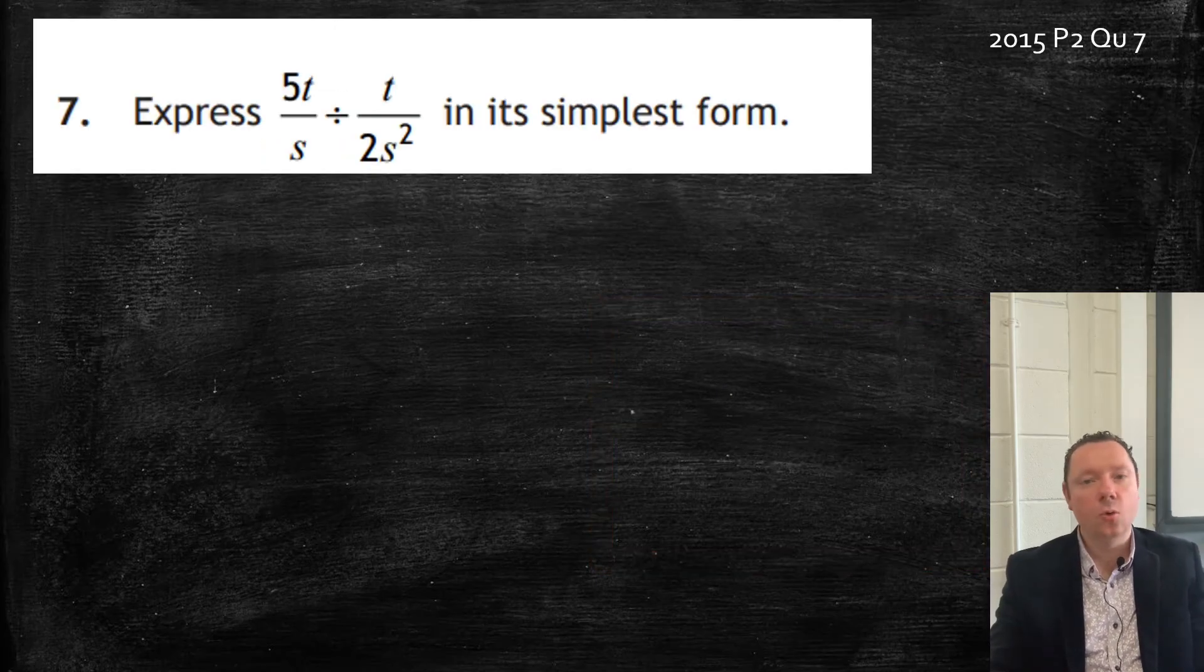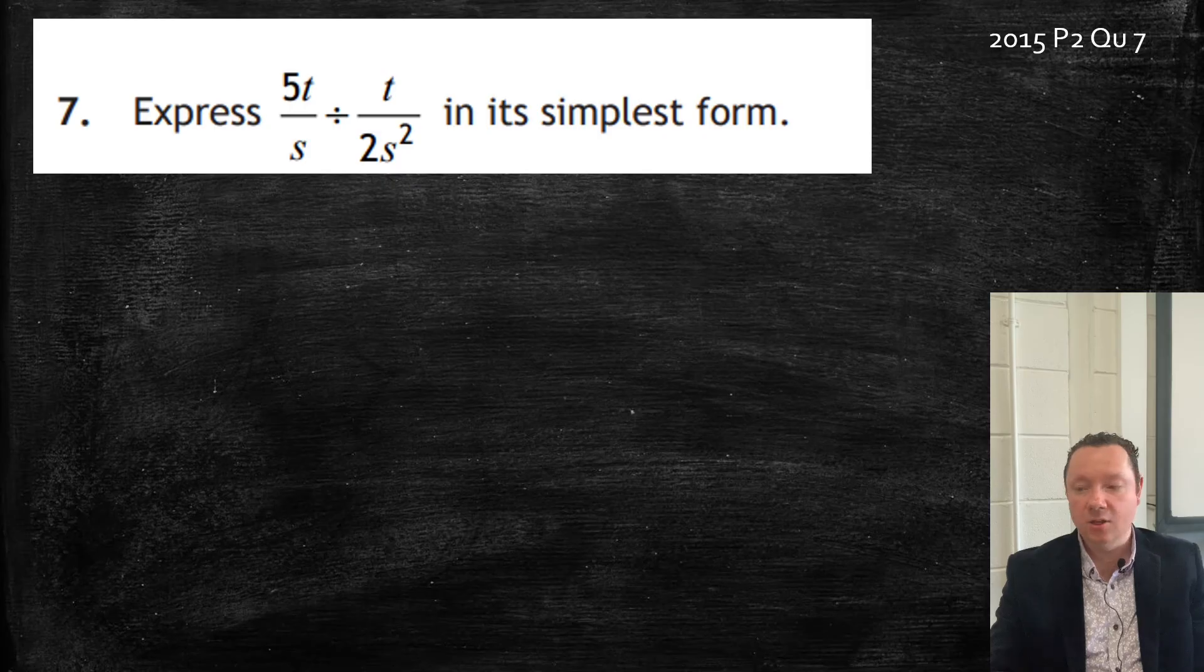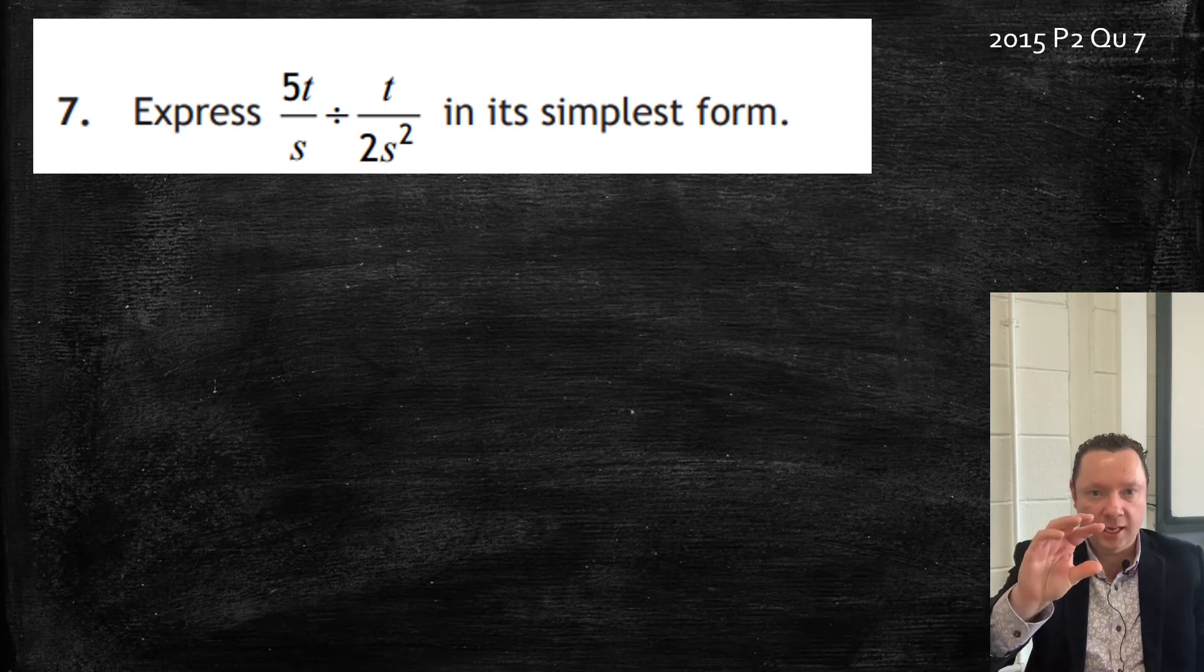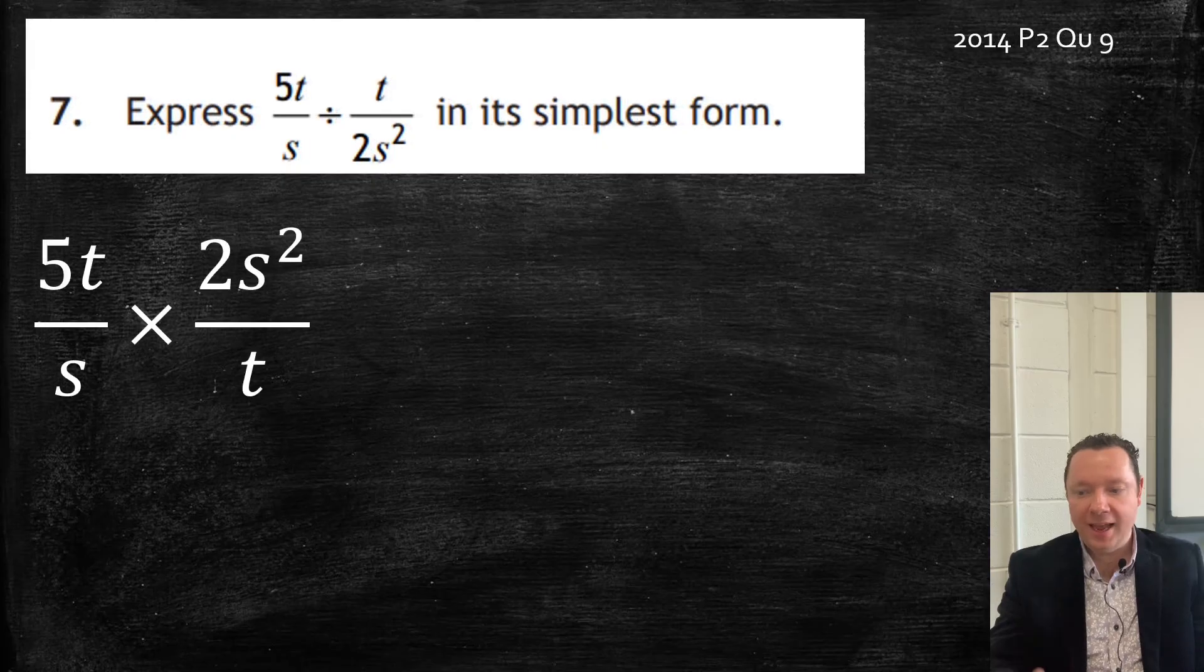2015 paper 2, question 7. Divide. So remember, divide means divide changes to times and we're times by the reciprocal of the second fraction. We turn the second fraction upside down. So if we do that, look at it. We are going to get (5t)/s × (2s²)/t.